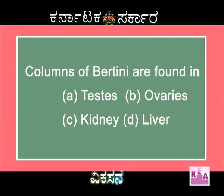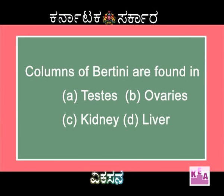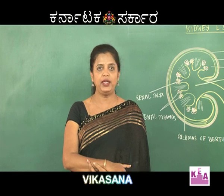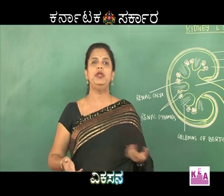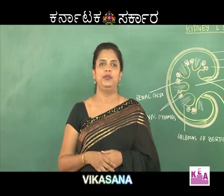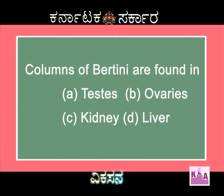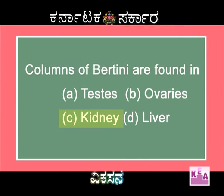The next question is about columns of Bertini — where are they found? The options are testis, ovaries, kidney, and liver. Columns of Bertini are also called medullary rays. They are not found in the testis, which is a sexual organ, nor in the ovaries, which contain Graafian follicles. The correct answer is kidney. Liver cannot have them either. Therefore, columns of Bertini are found in the kidney.